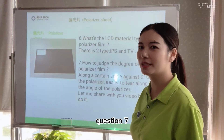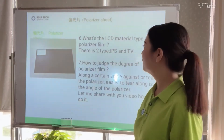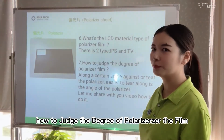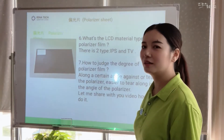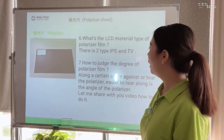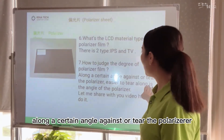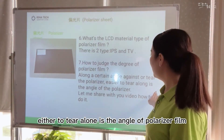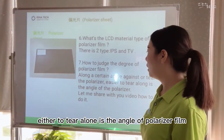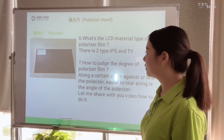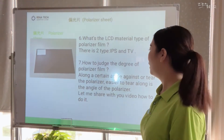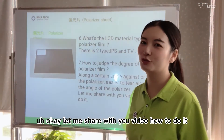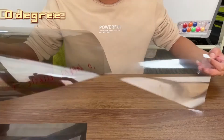Question seven: how to judge the degree of polarizer film? The method is along a certain angle against or tear the polarizer. Easier to tear along is the angle of the polarizer film — the angle means degree. Let me share with you a video on how to do it.